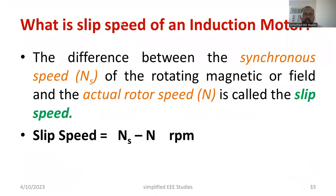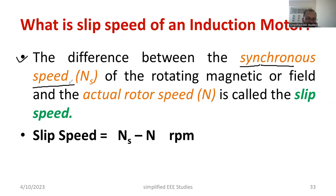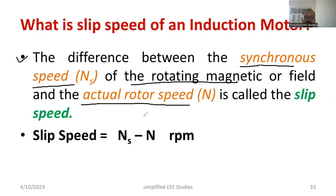First, let us understand what do you mean by slip speed. Moving on to the definition: the slip speed is nothing but the difference between the synchronous speed — noted by the letter NS — of the Rotating Magnetic Field and the actual rotor speed. That is called slip speed.